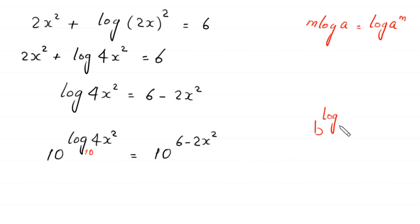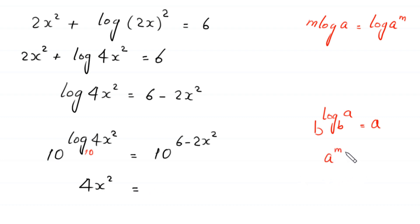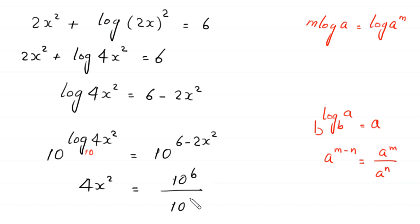Using the log property that b to the power log base b of a equals a, the left-hand side simplifies to 4x squared. On the right-hand side, we use the exponent rule: a to the power (m minus n) equals a to the power m divided by a to the power n. So the right side becomes 10 to the power 6 divided by 10 to the power 2x squared.